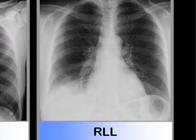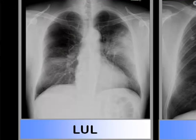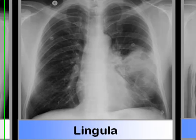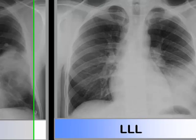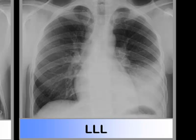This is the appearance of pneumonia in the right lower lobe, which silhouettes or obscures the right hemidiaphragm. This is the appearance of pneumonia in the left upper lobe. This is pneumonia in the lingula, the analog to the right middle lobe, which obscures the left heart border. And this is left lower lobe pneumonia, in which the heart border is retained but there is silhouetting of the left hemidiaphragm.